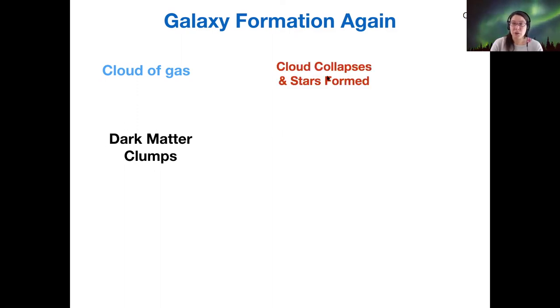So once you have this cloud of gas, the overall model of galaxy formation is the same regardless of what type of galaxy we're talking about. The overall process is simply that that gas cloud collapses. And as it collapses, small, more dense regions collapse into stars.